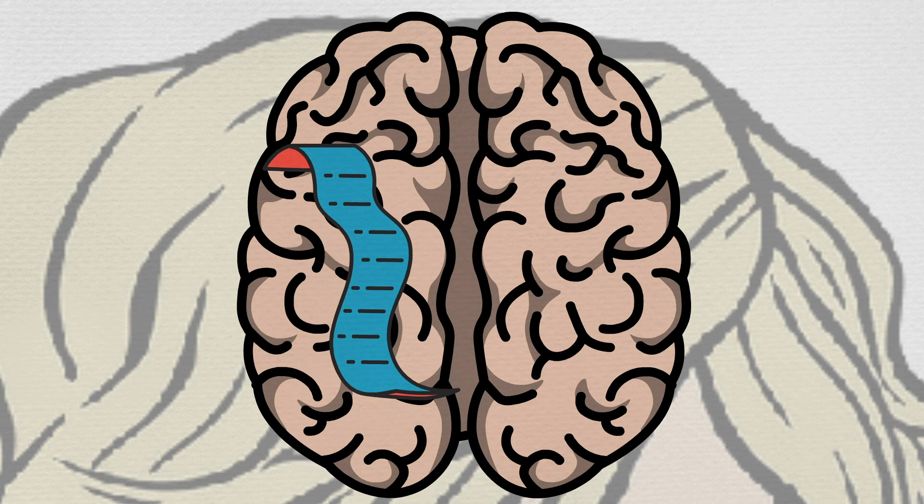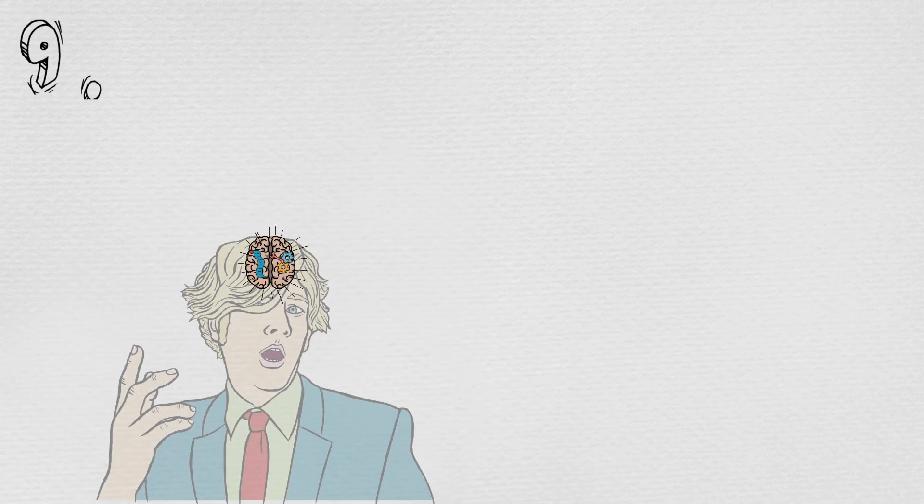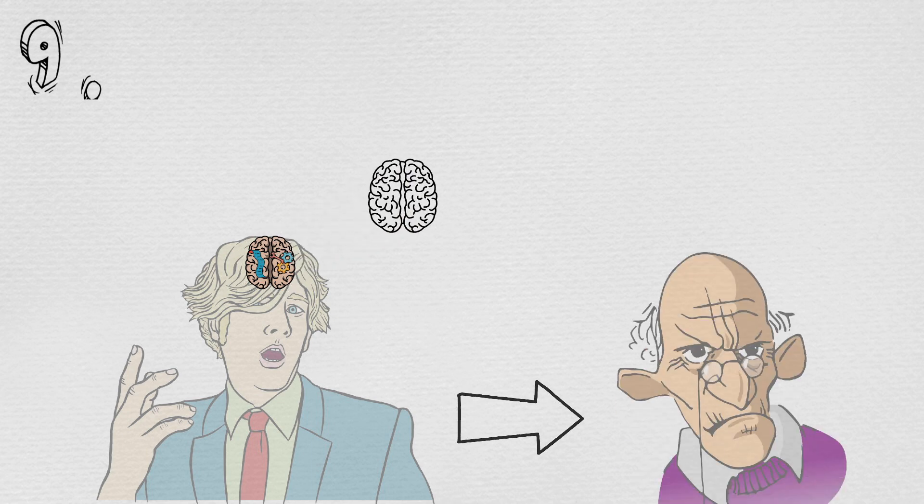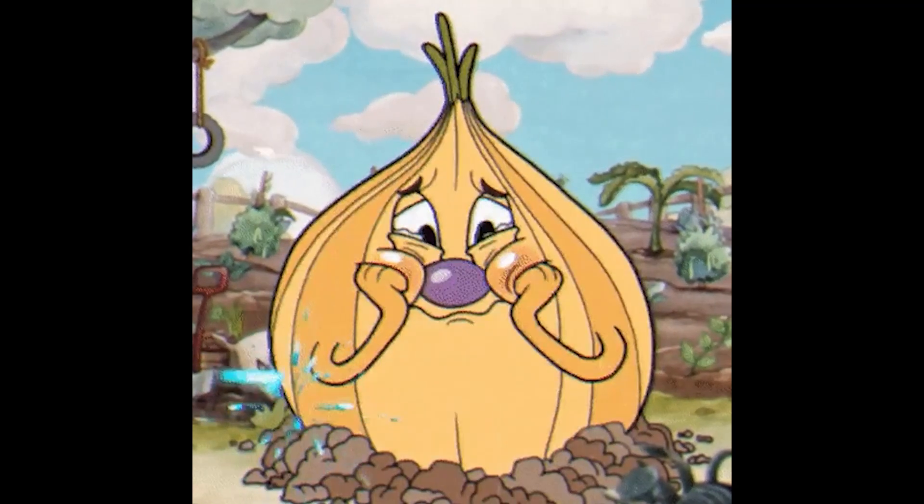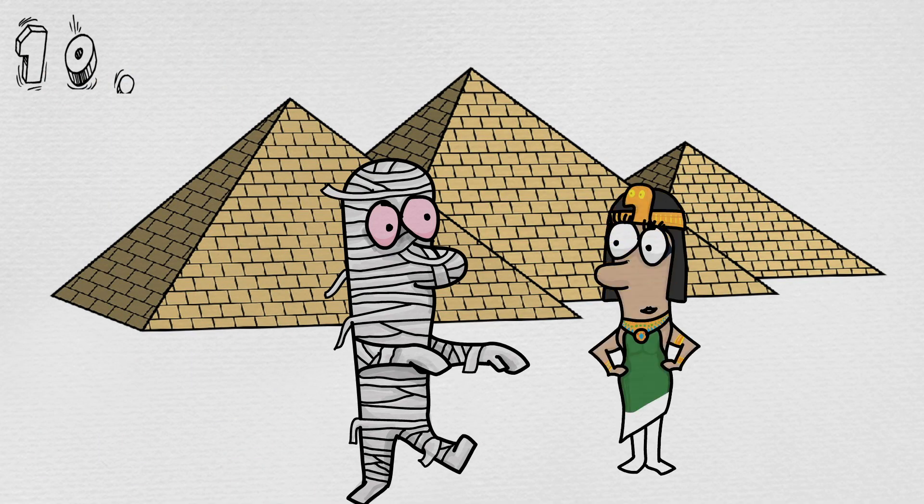Number nine: A human brain late 20s mein apni memory or cognitive skills lose karne lagta hai aur jaise jaise hum budhe hote jate hain, humara brain chota hota jata hai. That's too bad.